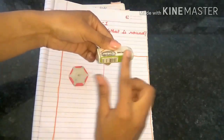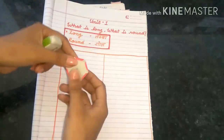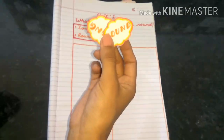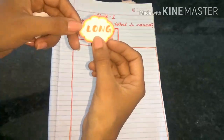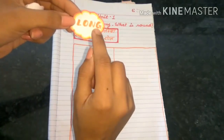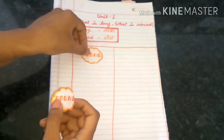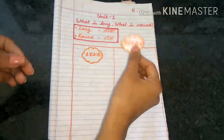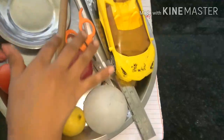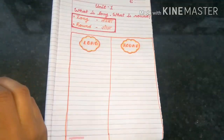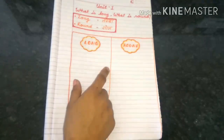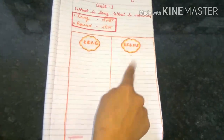So this is long and this is round. Now you can see I have made this table and I am going to label them by using these two stickers. In the first sticker I have written long and in the second sticker I have written round. I have some objects with me and I will show them one by one, and you will guess whether the object belongs to the long category or round category.